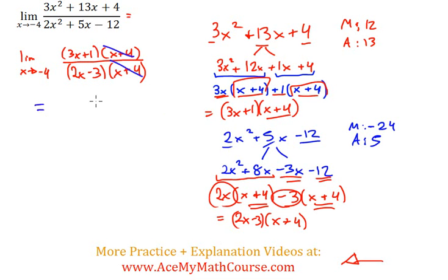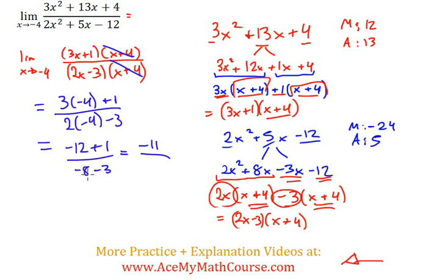Marvelous. Now what can I do? Now I can actually plug in the negative 4 for x. So I have 3 times negative 4 plus 1 over 2 times negative 4 minus 3. Negative 4 times 3 is negative 12 plus 1 over negative 4 times 2 is negative 8 minus 3. Negative 12 plus 1 is negative 11. Negative 8 minus 3 is negative 11. Negative 11 divided by negative 11 is just positive 1.